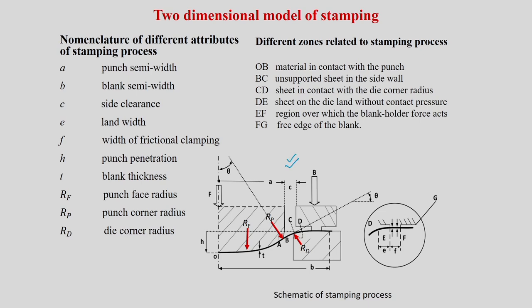The black-colored line is the sheet, which has points O, A, B, C, D, E, F, and G — this particular portion is zoomed in. The points O through G cover one half of the stamped sheet metal component. The punch is actually deforming the sheet, and the height of deformation is called punch penetration or draw depth H. The distance from the center axis to the edge of the punch is the punch semi-width A.